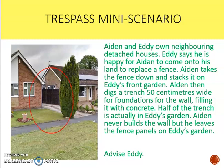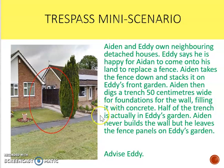Let's start by looking at the scenario. Aiden and Eddie own neighboring detached houses. Eddie says he's happy for Aiden to come onto his land to replace a fence. Aiden takes the fence down and stacks it on Eddie's front garden. Aiden then digs a trench 50 centimeters wide for foundations for the wall, filling it with concrete. Half of the trench is actually in Eddie's garden. Aiden never builds the wall but he leaves the fence panels on Eddie's garden. You're being asked to advise Eddie.